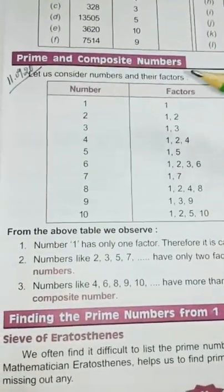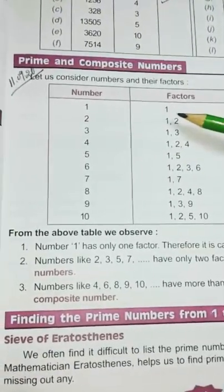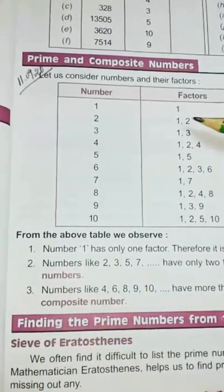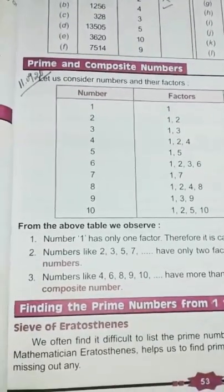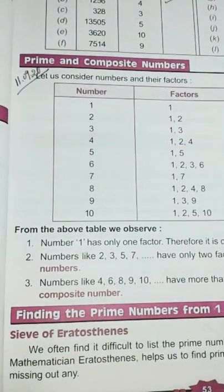But children, you see, one has only one factor. So it is known as unique number. Clear about prime, composite and unique number?